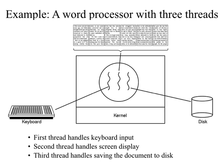Here's an example: a word processor with multiple threads. One thread handles keyboard input, another renders output on the display, and a third writes data to disk. These threads operate concurrently, so if one blocks the others can still execute. For instance, if the keyboard thread blocks waiting for input, the thread writing data to disk can still continue saving the file.